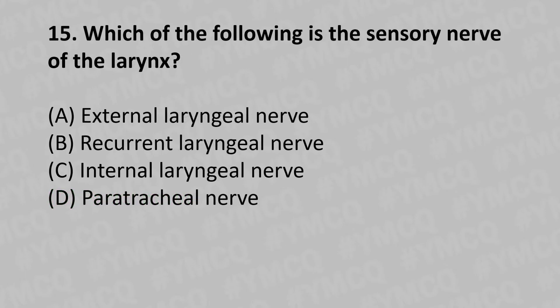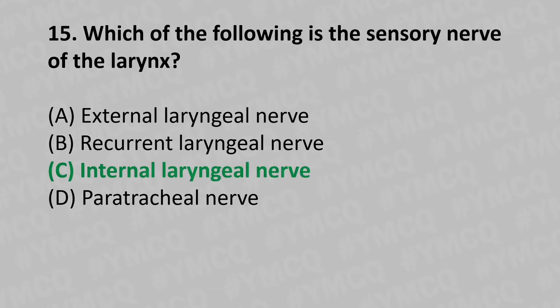Moving to our fifteenth question: which of the following is the sensory nerve of the larynx? Option A: external laryngeal nerve. Option B: recurrent laryngeal nerve. Option C: internal laryngeal nerve. Option D: paratracheal nerve. The answer is Option C: internal laryngeal nerve.